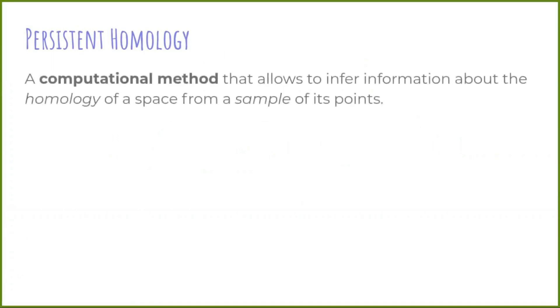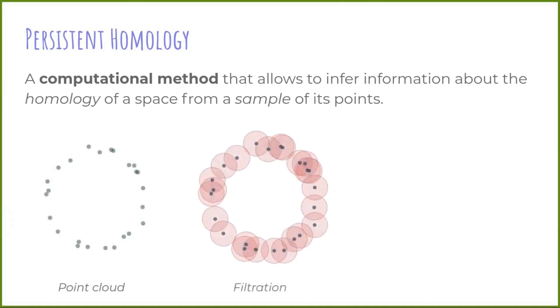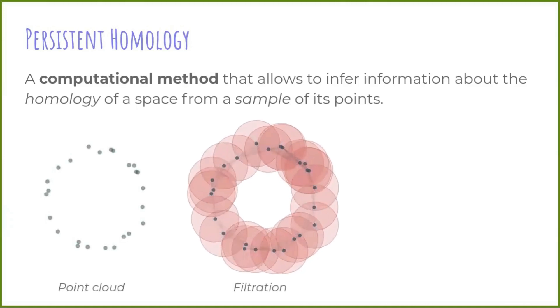Let's start by recalling some basics on persistent homology. Persistent homology is a popular tool in topological data analysis that allows to infer information about the homology of a space from a sample of its points. A basic pipeline is the following: start with the point cloud, build a filtration of simplicial complexes and track the evolution of its homology groups.